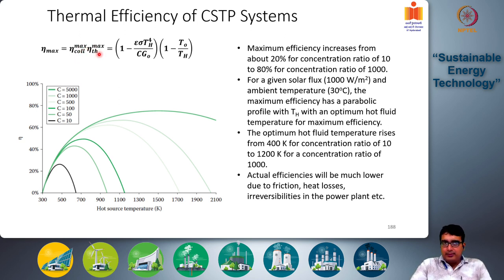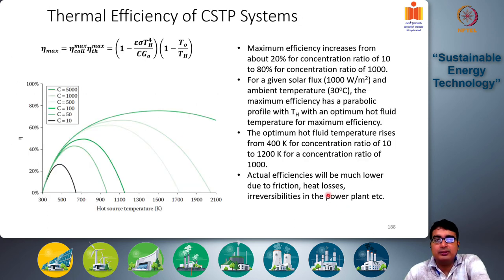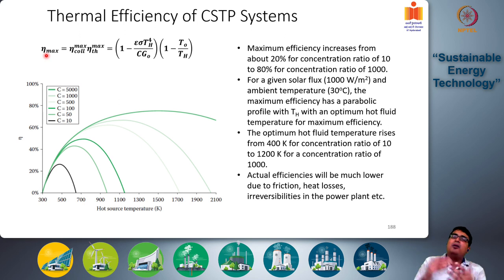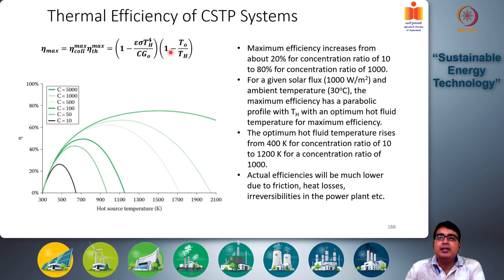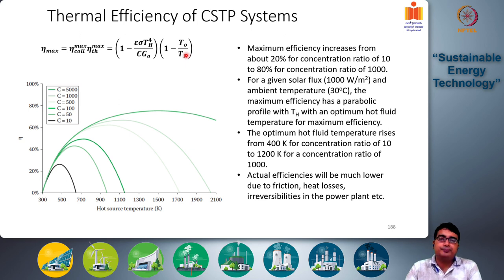The total efficiency is η_collector_max × η_thermal_max. η_collector_max is q̇_in / (C · G₀) and η_thermal_max is Ẇ_net_max / q̇_in, so together this becomes the net power output divided by C · G₀. This simplifies to: η_total = [1 − (ε · σ · T_h⁴) / (C · G₀)] × [1 − T₀/T_h], which is a non-linear function of the hot source temperature T_h — the temperature to which the heat transfer fluid (molten salt or mineral oil) can be raised.